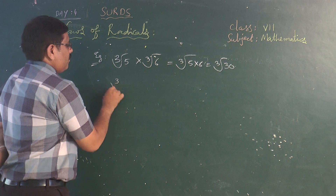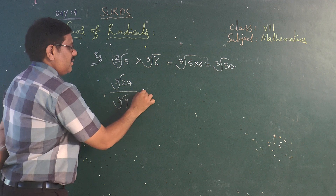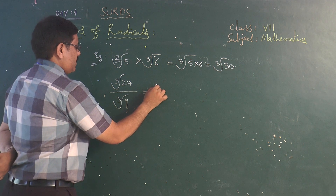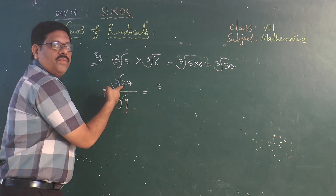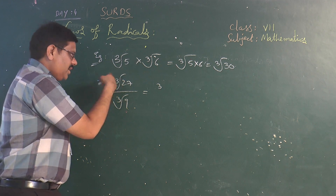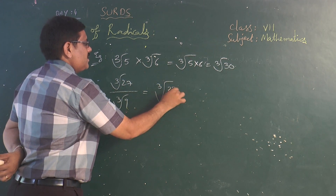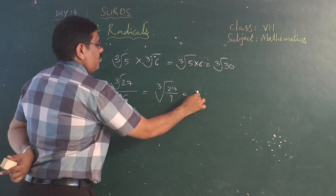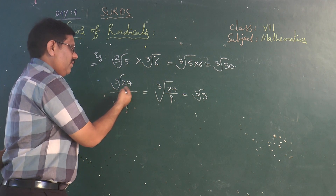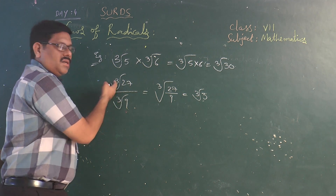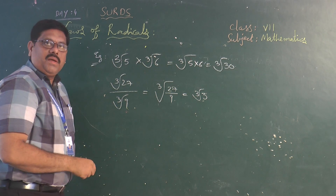Similarly, if you have cube root of 27 divided by cube root of 9, that can be written as cube root of 3. Of course, cube root of 27 is not an irrational radical, but if it is given like that we can write it as cube root of 27/9, which equals cube root of 3. We can write this because the orders are the same.